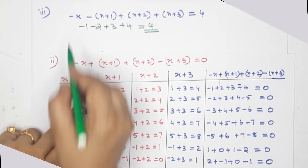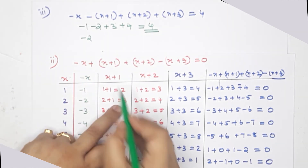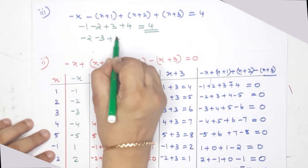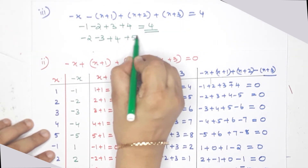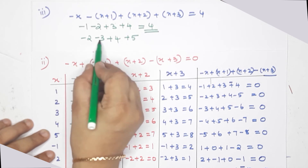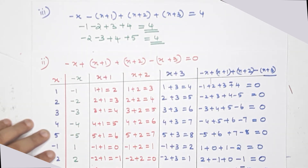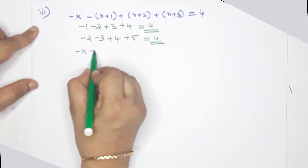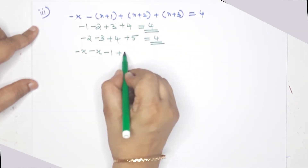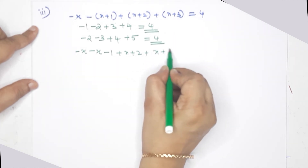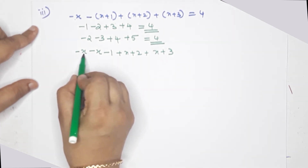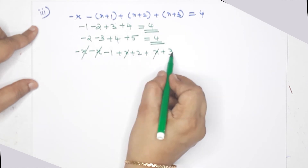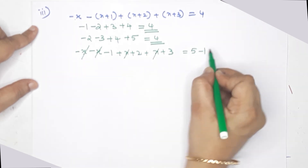Let's test with x equals negative 2: negative 2, negative of 3, plus 4, plus 5. The answer is 4. Now let's expand: minus x plus x plus 1 plus x plus 2 plus x plus 3. Distributing gives minus x plus x plus 1 plus x plus 2 minus x minus 3. This is equal to 5 minus 1, that is equal to 4.